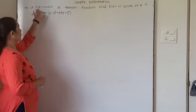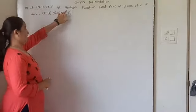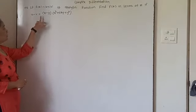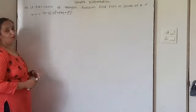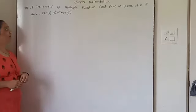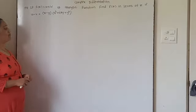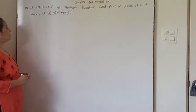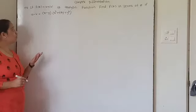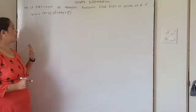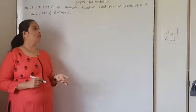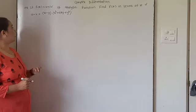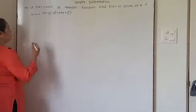Now if I want to find f(z) in terms of z, what is given? u minus v is equal to (x minus y) into (x squared plus 4xy plus y squared). In the previous video we have seen that they gave you u and v and then you had to find another function, but in this case they have given us the value of u minus v.